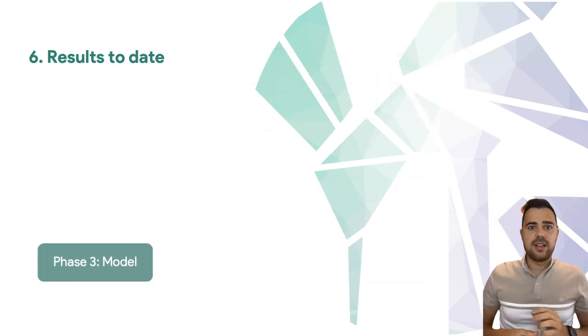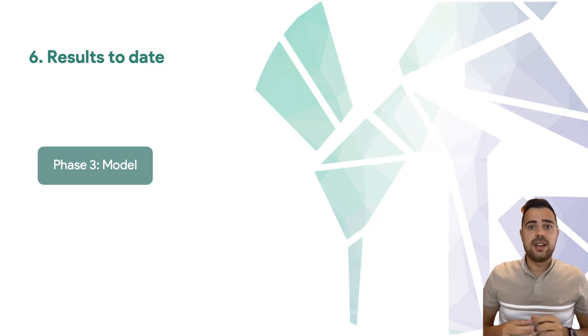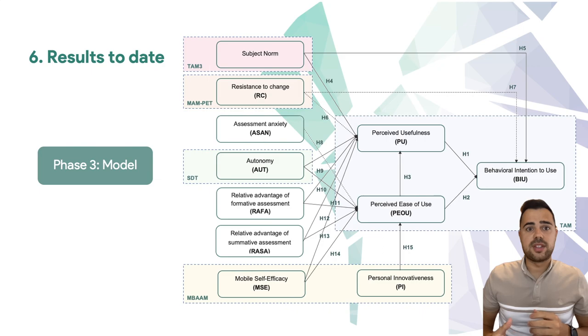Finally, the thesis is currently in the process of building and validating its own model. This model has a total of 11 dimensions, nine of which are extracted from five different existing models and two dimensions created by me. It is expected that the combination of these models and the proposed dimensions will be able to explain a higher percentage of variance in order to establish the factors that predict the intention to use e-assessment tools in university teachers.